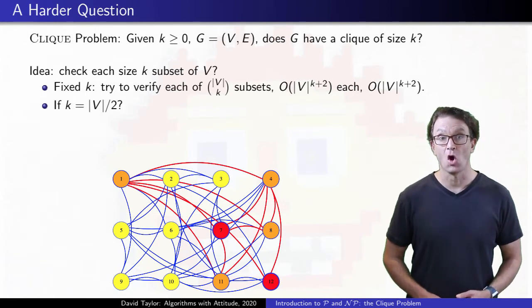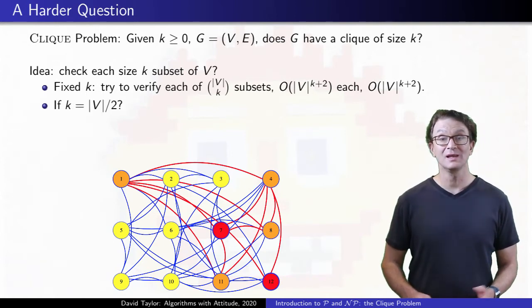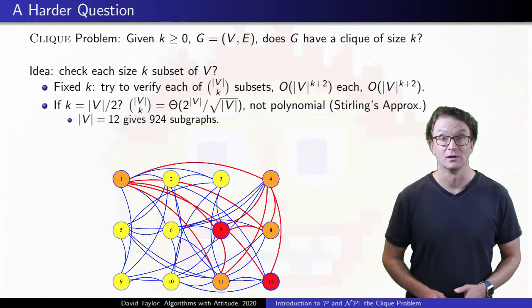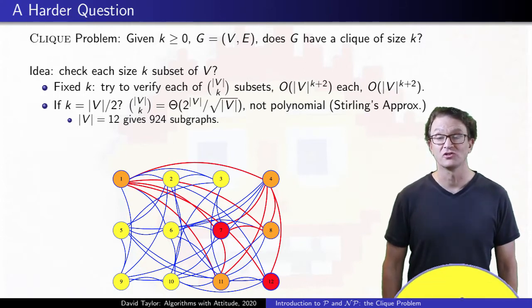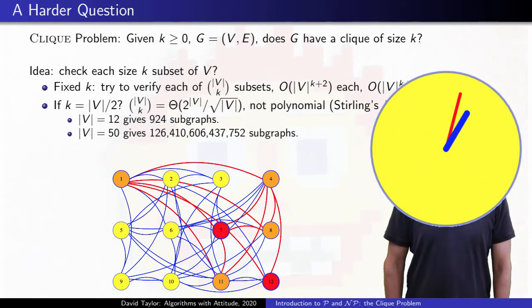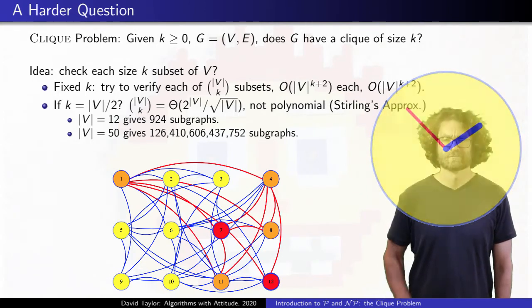But if we let the size also grow with the run time, it isn't polynomial. That's not a problem for our tiny graph here, but if you want to check all size 25 subsets in a small graph with 50 vertices, there are a lot of possible subsets. You are not going to want to wait for it.